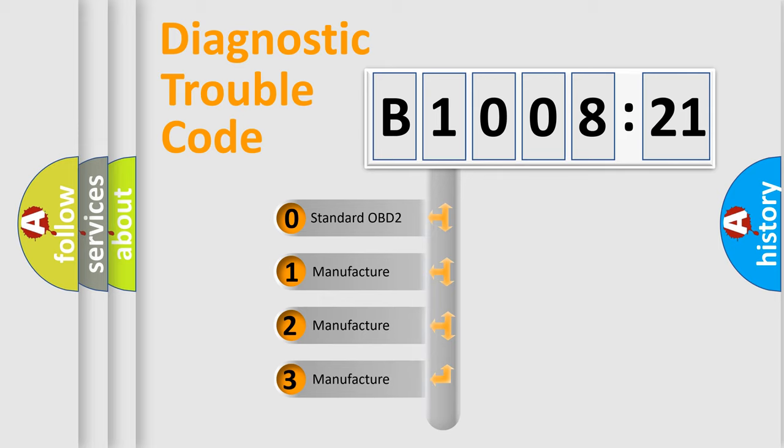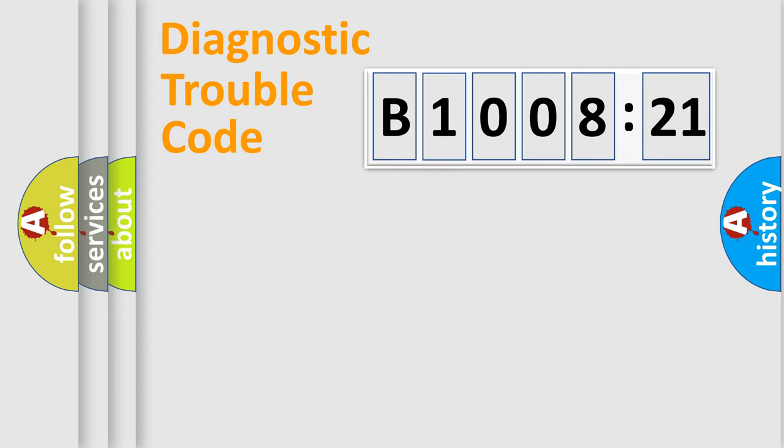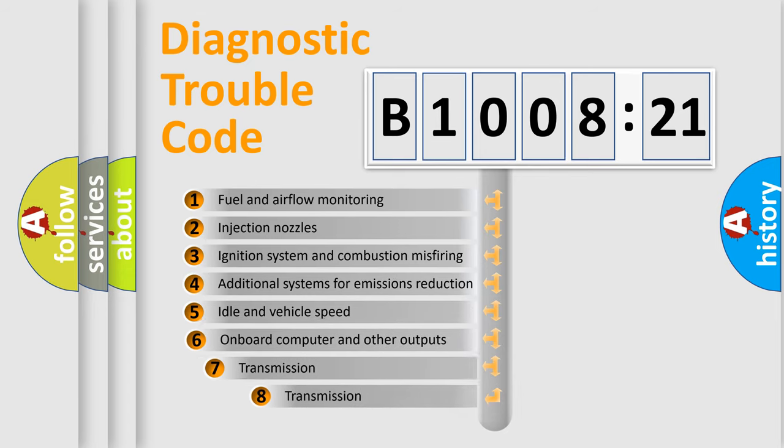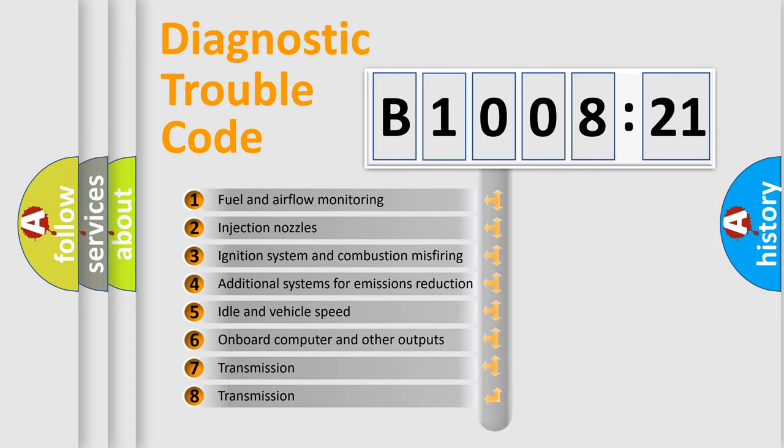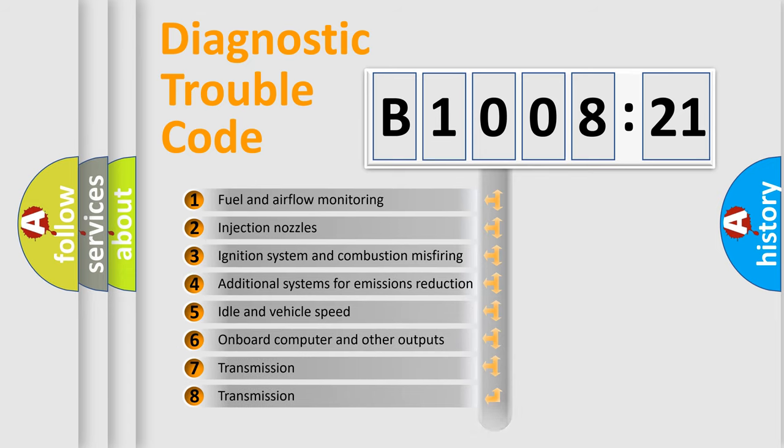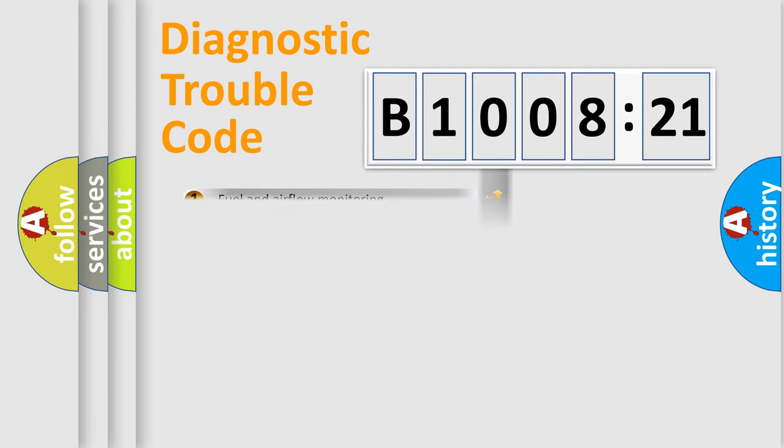If the second character is expressed as zero, it is a standardized error. In the case of numbers 1, 2, or 3, it is a manufacturer-specific expression of the car-specific error. The third character specifies a subset of errors. The distribution shown is valid only for the standardized DTC code. Only the last two characters define the specific fault of the group.